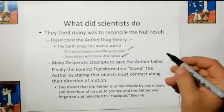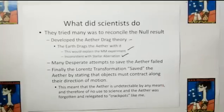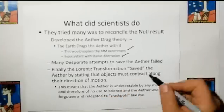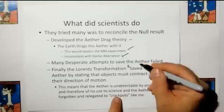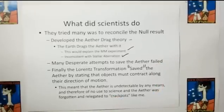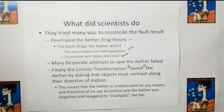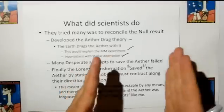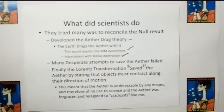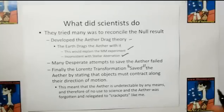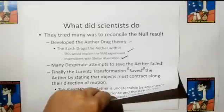There were many desperate attempts to save the aether. Finally, the Lorentz transformation saved the aether by killing it — basically saying that things must contract along their length as they move, which means that no matter what you do, you can't measure the aether. And because of that, the aether was forgotten and relegated to crackpots like me.